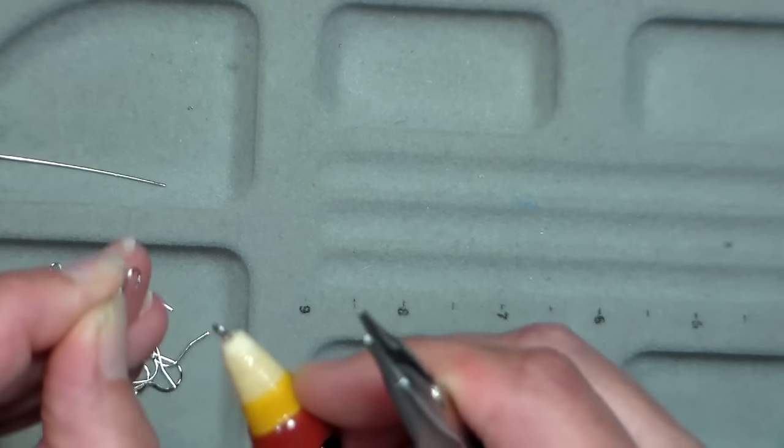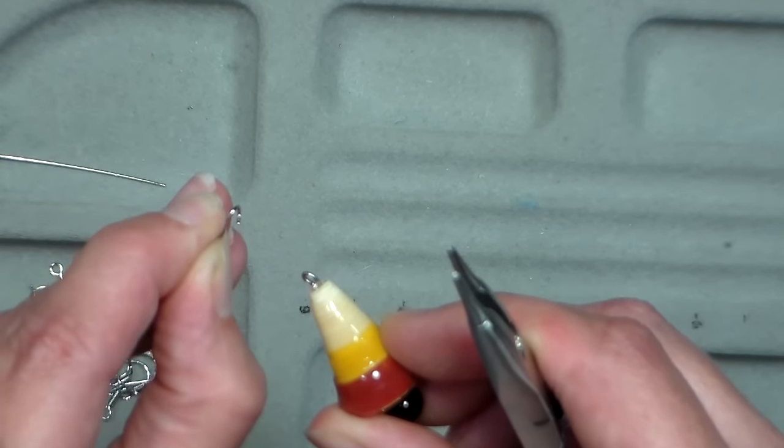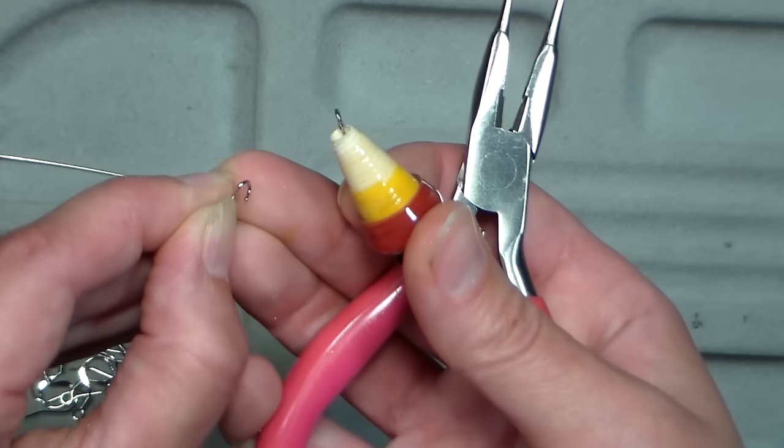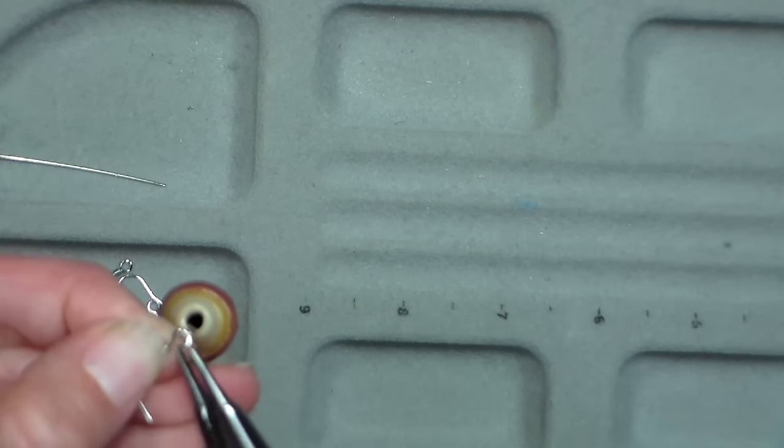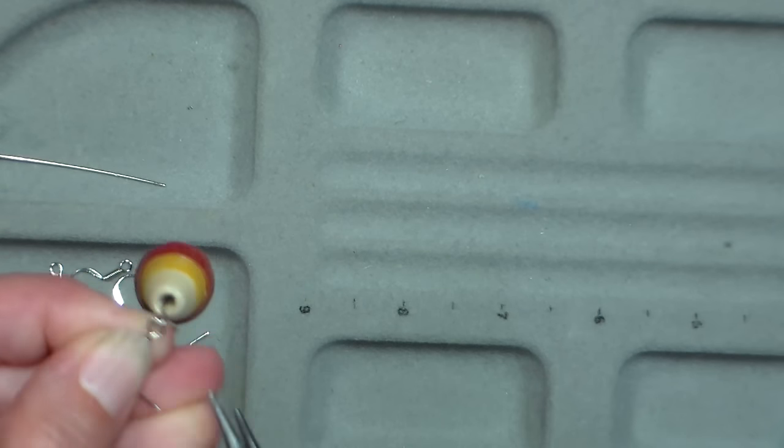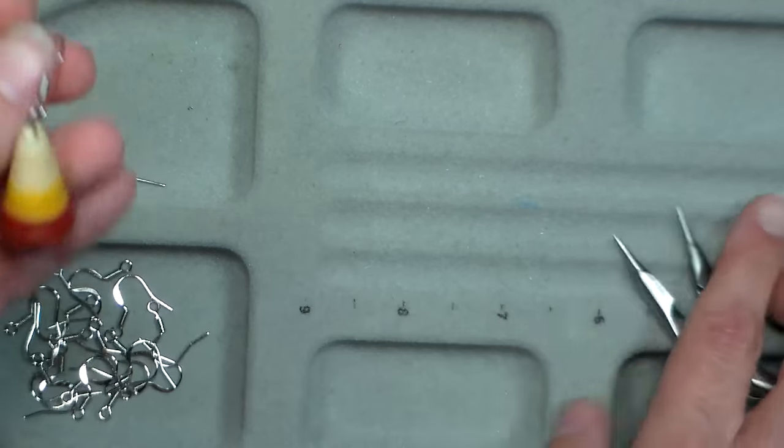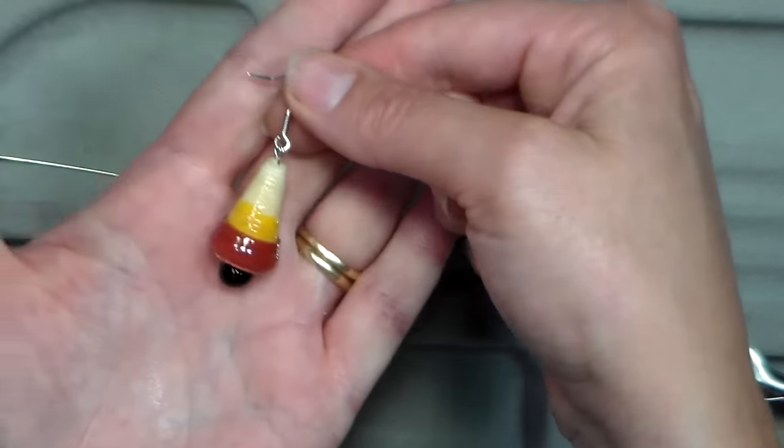You never want to open it up like a U, you just want to twist it so you have just a little space in there. See that little space, and I'm gonna just slide that right on there, and close it up just by twisting it closed, nothing fancy. And there is our finished earring.